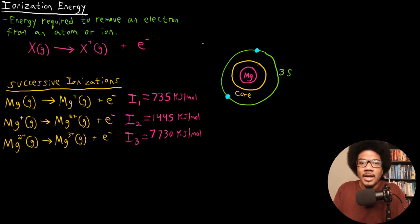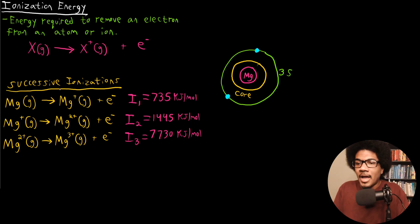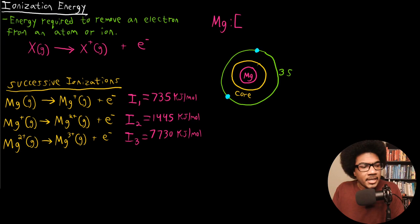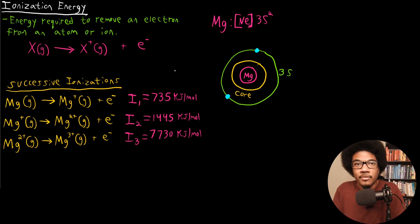I want to address a few things. First, where does this electron come from? Let's isolate the first ionization. If we look at the electron configuration for magnesium, it's going to be [Ne] 3S². So where does that first electron come from? It's coming from this 3S orbital.